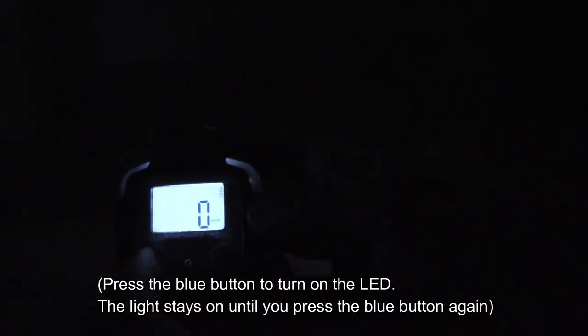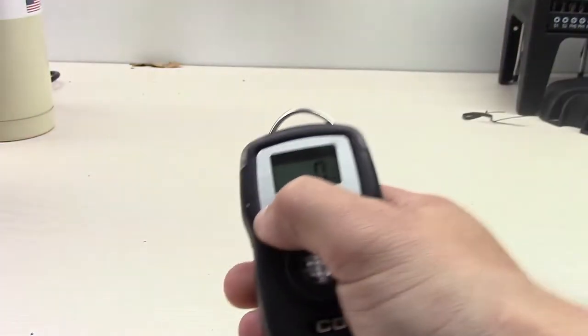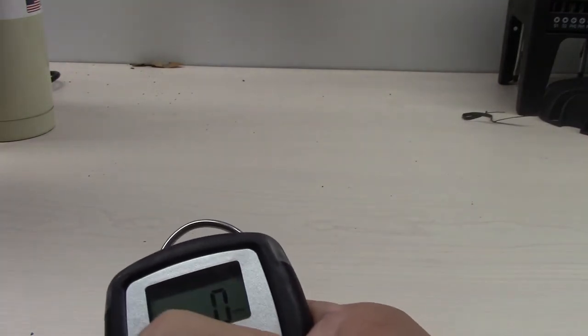This blue button is a LED light for when you're in the dark. You can also use this blue button to tell you the current time. You hold it down.